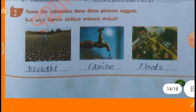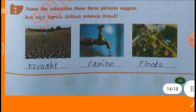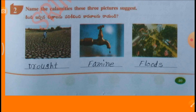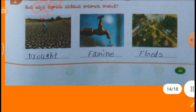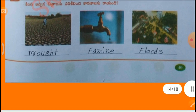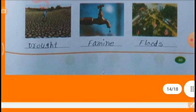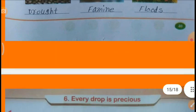Name the calamities these three pictures suggest. First one: Droughts. Second one: Famine. Third one: Floods.